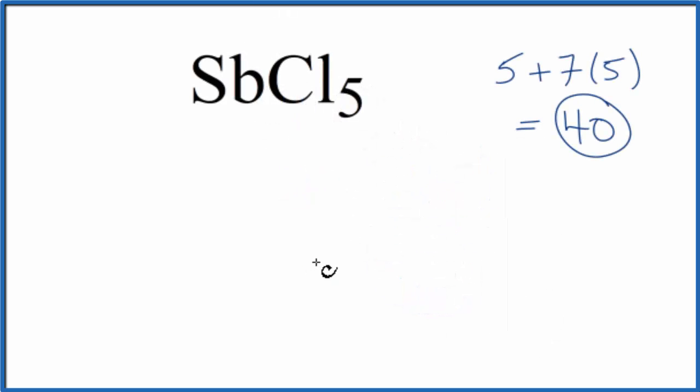Sb is the least electronegative element. We're going to put that in the center, and then we're going to put 5 chlorine atoms around it.